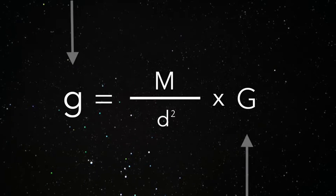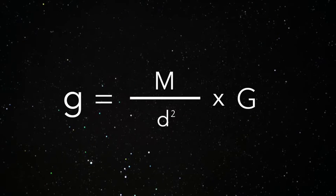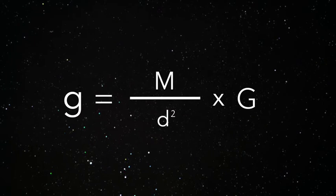We pretty much follow the same rule here for this formula. We multiply the gravitational constant by the mass of the object we want to find the strength of the gravitational field of, and then divide it by the distance from the center of its mass.